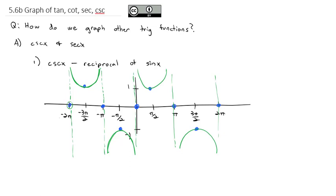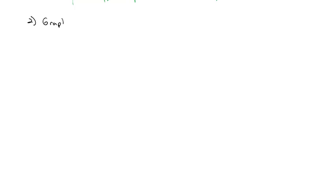We could go through a very similar process to graph secant, which is the reciprocal of cosine — it would look much like the same graph, just moving the vertical asymptotes to where cosine hits the x-axis. But let's make these more interesting by adding transformations. Let's graph 2 cosecant of (π/2)θ + 1.